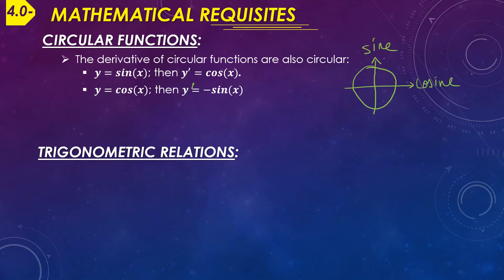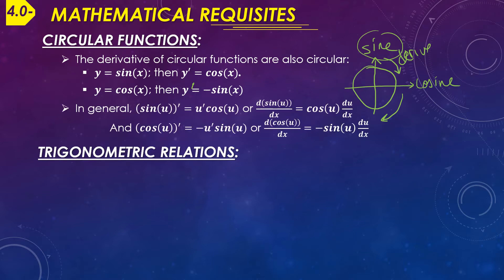When we derive, we move clockwise. If you have sine, you get cosine. If you have cosine, you get minus sine because we're in the negative y region. In general, if you're deriving a function y = sin(u) where u itself is a function of x, then the derivative becomes cos(u) times u', which is the derivative of u.